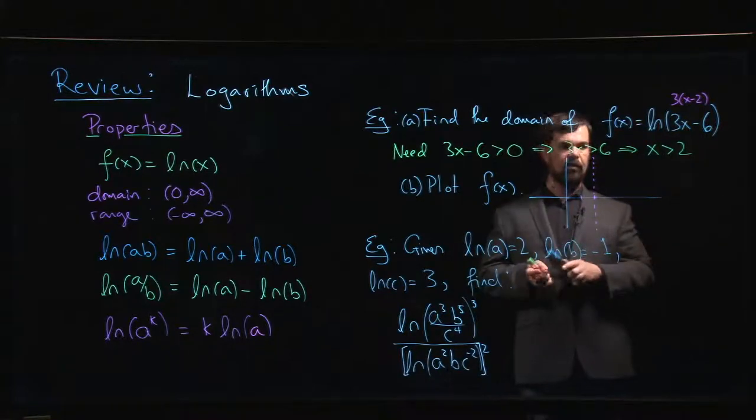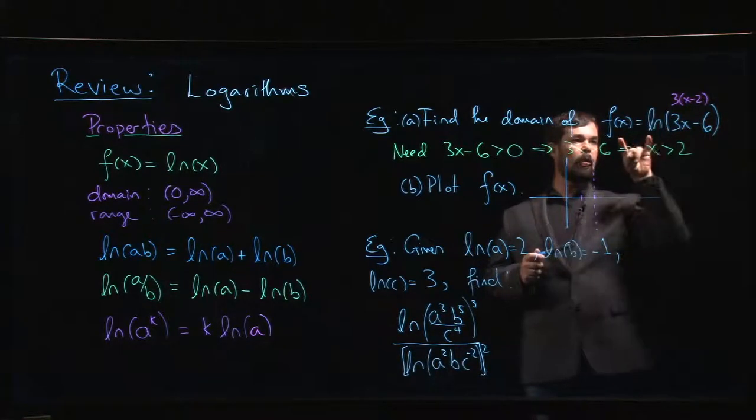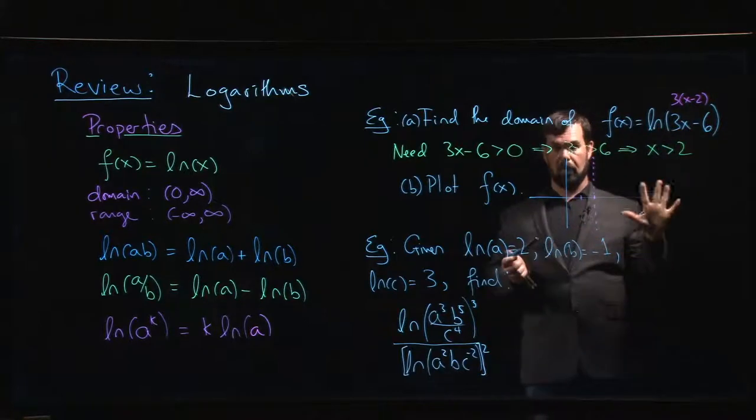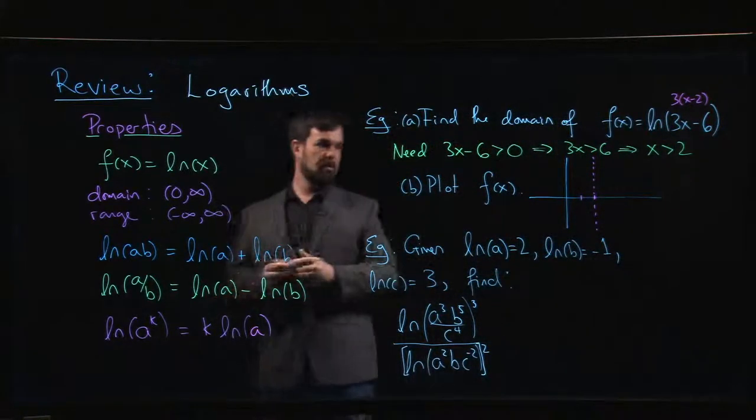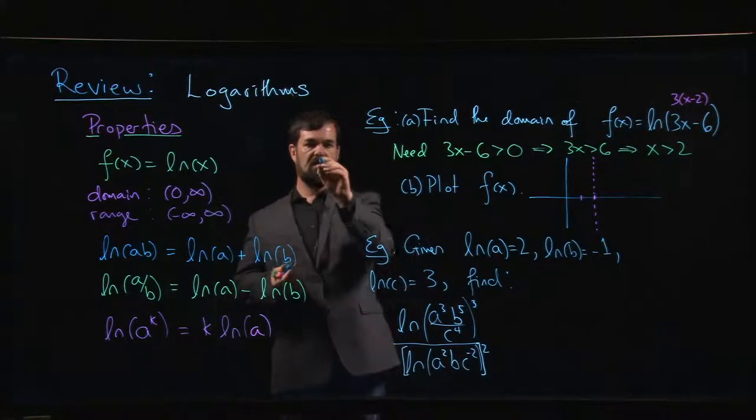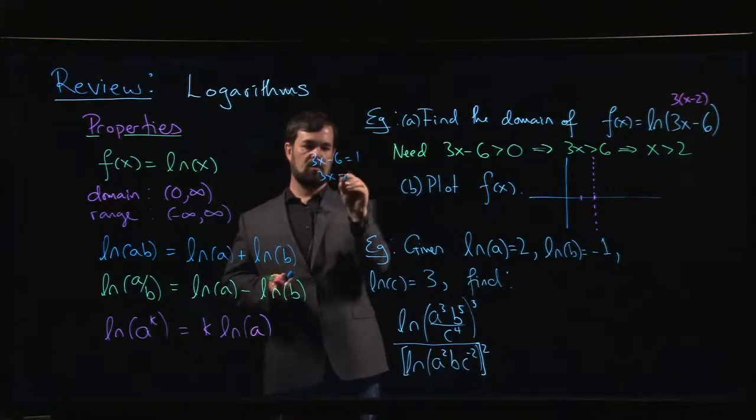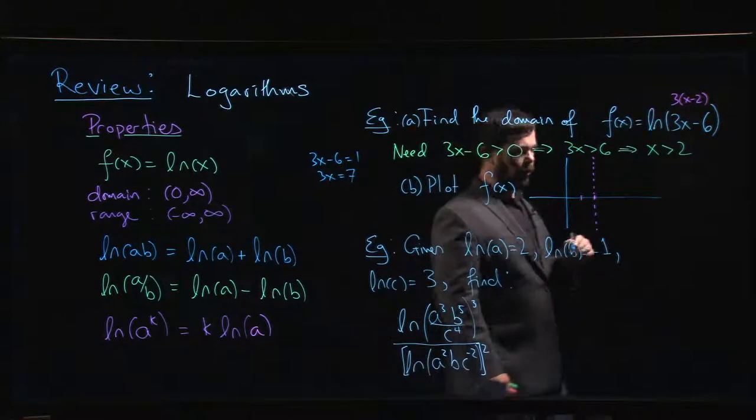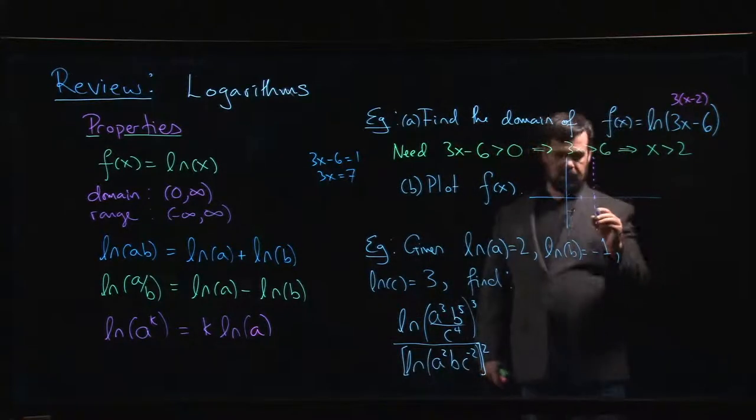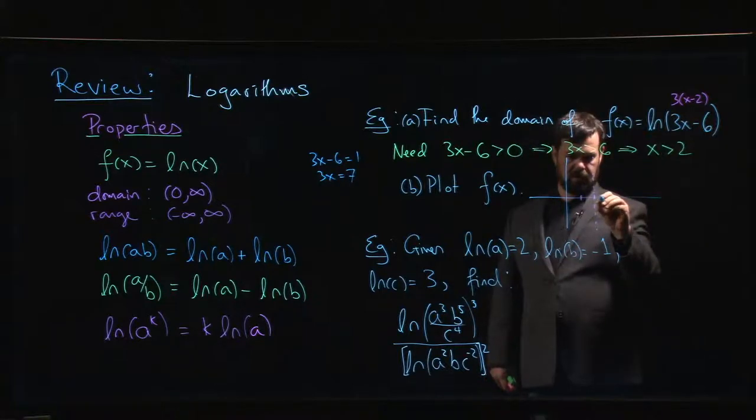We know that the natural log of 1 is always equal to 0. So if we set 3x minus 6 equal to 1, so 3x equal to 7, so at x equal to 7 over 3, which is just 2 and a third, so it's around there.